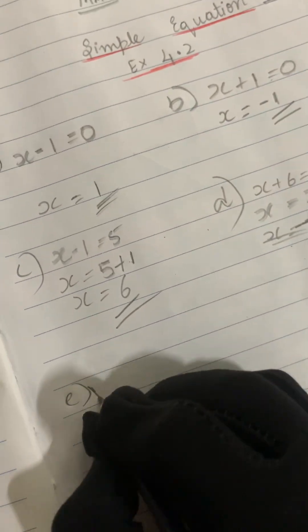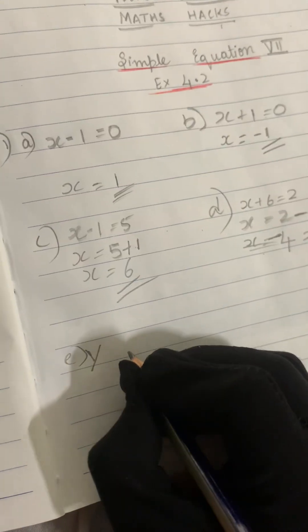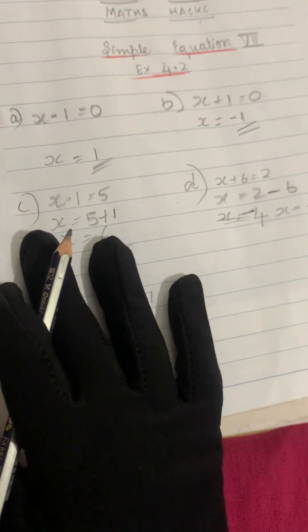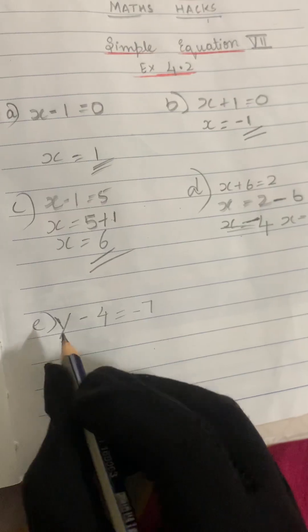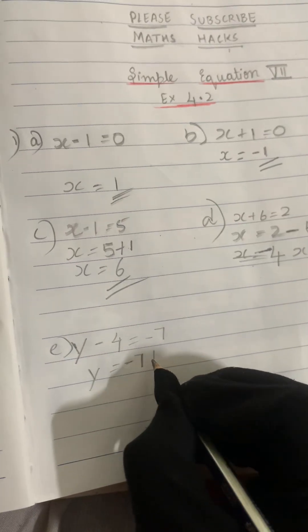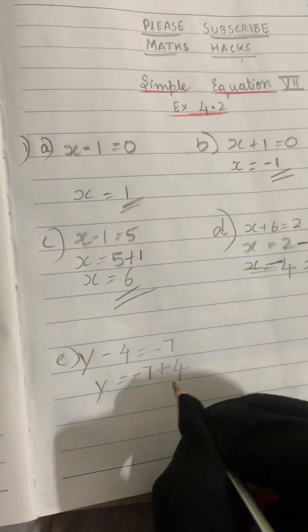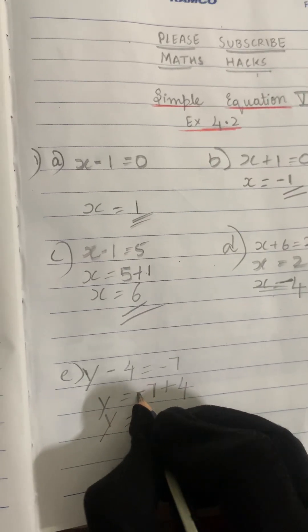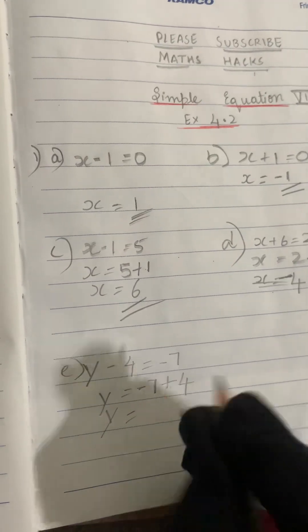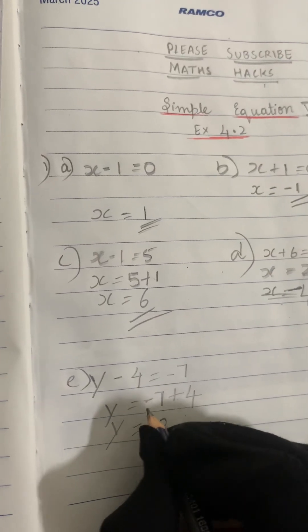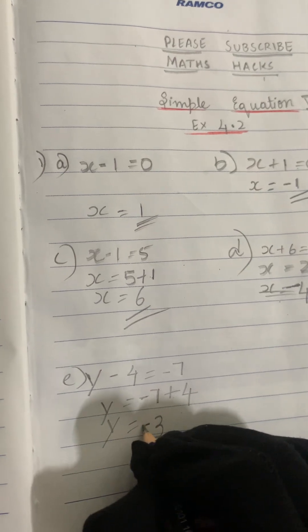Now let's solve the E sum. The question is y minus 4 equals minus 7. Here we solve for y. So y equals minus 7; shifting minus 4 to the numbers side gives plus 4. So y equals minus 7 plus 4. We have two signs: minus and plus — minus into plus is minus. So we subtract: 7 minus 4 is 3. The greater number is 7 and its sign is minus, so y equals minus 3 is our answer.